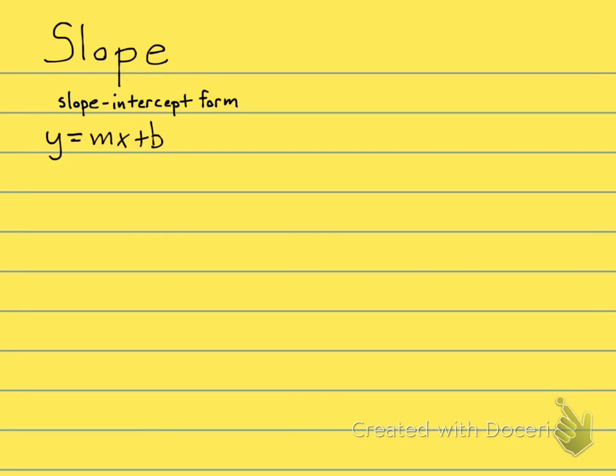The reason we call this slope-intercept form is because if your y is all by itself, you can just look at this and tell me what the slope is. It's the m. And what the b is. It's the y-intercept. Remember, for a y-intercept, you have to plug in a 0 for x. So if you see a line that looks like this,